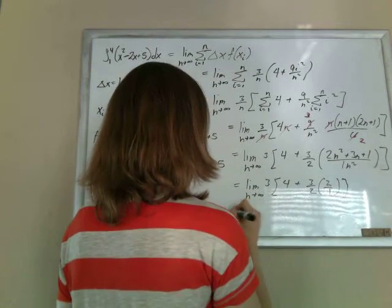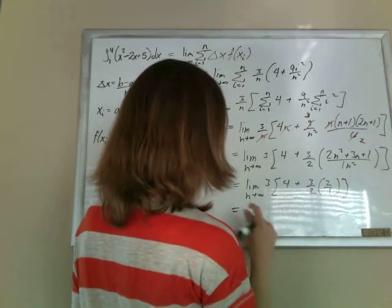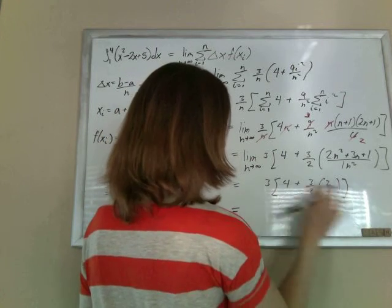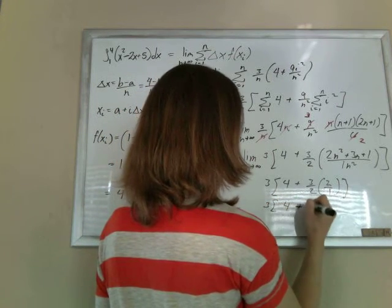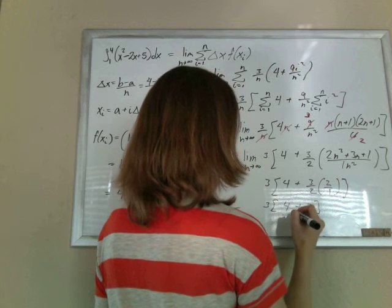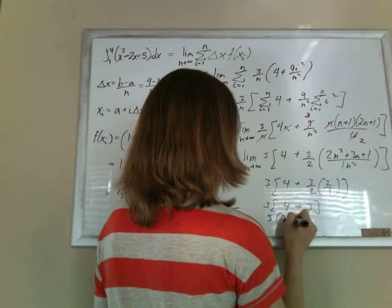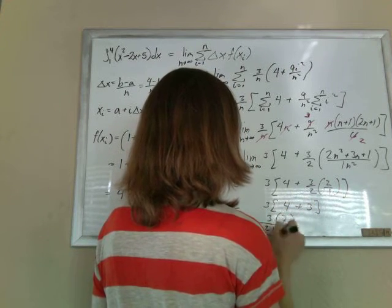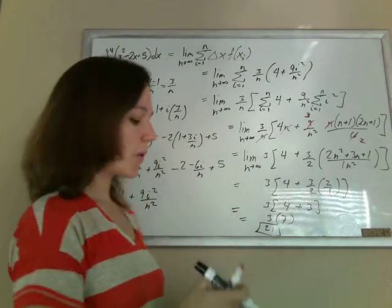So now we are... Oh, I did the limit. So now we just have to figure out what this is. So that's 3 times 4 plus 3. That's 3 times 7, which is 21. Oh, we got an answer. Woo!